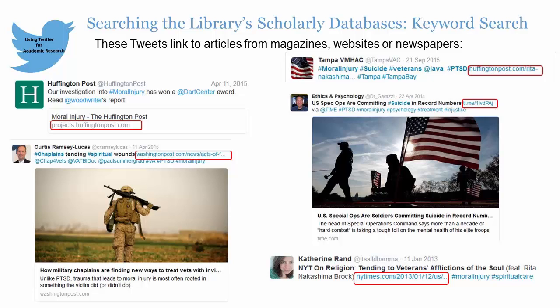This slide shows examples of tweets that link to articles in HuffingtonPost.com, Time Magazine, The Washington Post, and The New York Times. This indicates that people are sharing these varying resources to contribute to the conversation on moral injury. While articles from these sources are not considered scholarly, you can use them to become better informed about this topic. The articles accessed from the tweets displayed here discuss the spiritual wounds suffered by veterans and their increased risk of suicide. You can search the scholarly databases using keywords and concepts mentioned in these sources, then use the scholarly sources that you discover for your research.